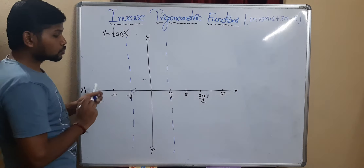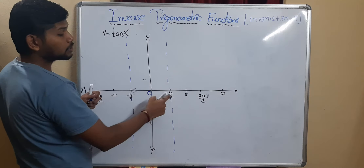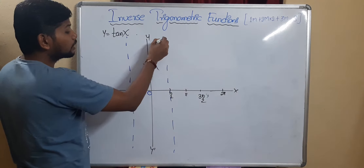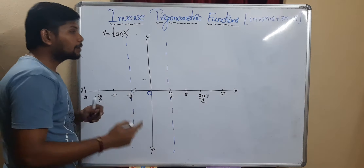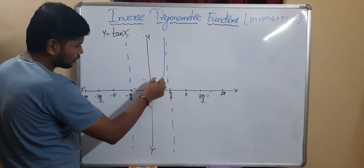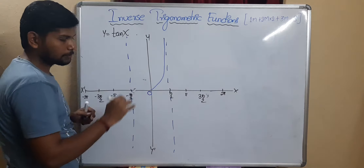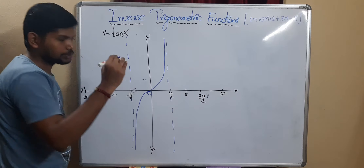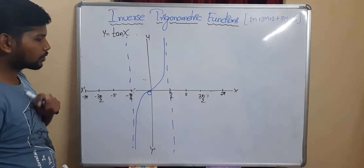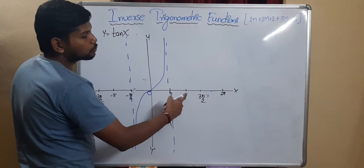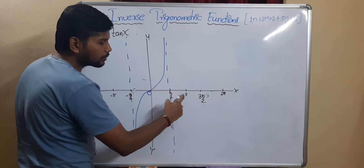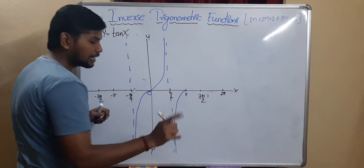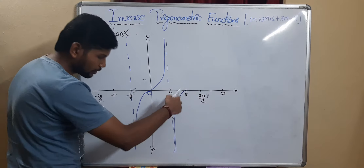From 0 to π/2, it is the first quadrant. In the first quadrant, tan is positive, so the graph will go upward. From 0 to −π/2, the graph will go downward. From π/2 to π, that is the second quadrant — in the second quadrant, tan is negative, so the graph will be downward.